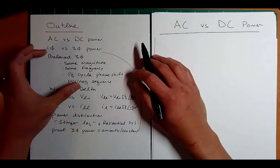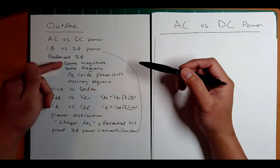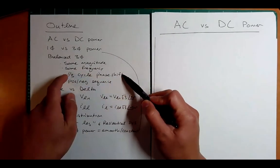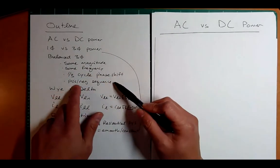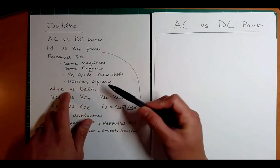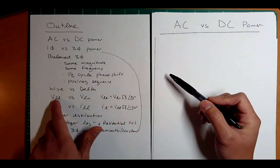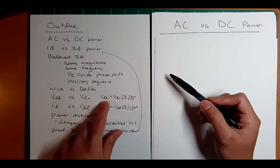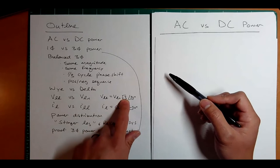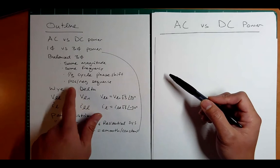We're going to talk about what it means to be balanced — what is balanced three phase power? Essentially it means same magnitude, same frequency, and you have three single phases that are offset by one third of a cycle. We'll look at what a positive and negative sequence means and then compare different configurations of Y and delta. We'll look at the consequences of V line-to-line and V line-to-neutral voltages, where the actual line-to-line voltage is actually bigger than the line-to-neutral by root three, or 1.7, and leads by 30 degrees if we're talking about a positive sequence.